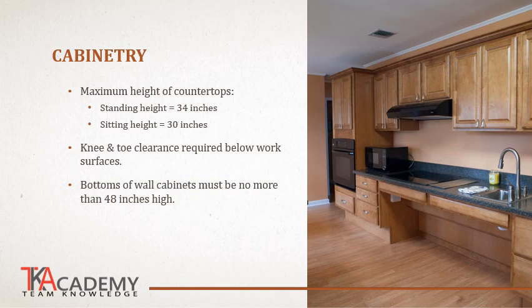For cabinetry or other working surfaces, there are maximum height requirements. Standing-height surfaces have a maximum height of 34 inches so someone in a wheelchair can still use that surface. For a sitting-height surface such as a workstation or desk, the maximum height is 30 inches. As with sinks and lavatories, keep in mind there are knee and toe clearance requirements below the working surface. One commonly missed requirement is that the bottom of any wall cabinet must be no more than 48 inches high.